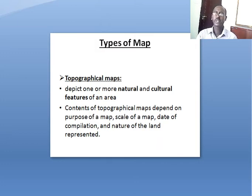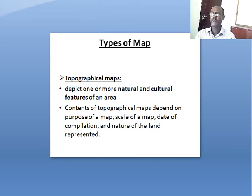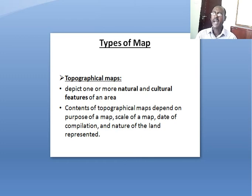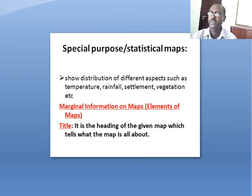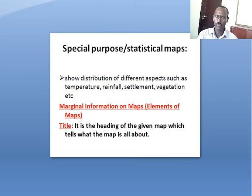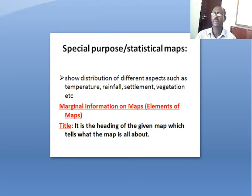Maps can be divided into two types. First, topographical maps, which depict one or more natural and cultural features of an area. The content of topographical maps depends on the purpose of the map, the scale, the date of compilation, and the nature of the land represented. Second, special purpose or statistical maps, which show the distribution of different aspects such as temperature differences between places, rainfall distribution, settlement patterns of population, or vegetation cover, which varies from area to area.